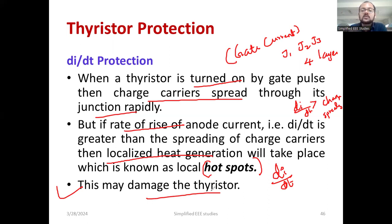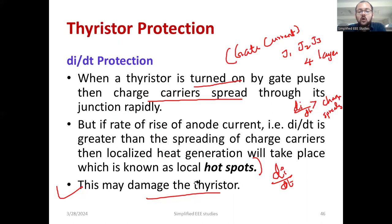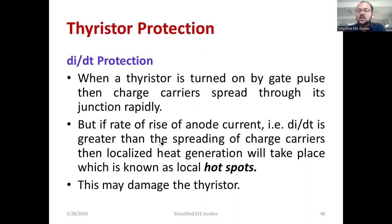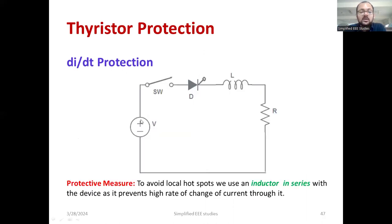The hotspot will generate excess heat and ultimately damage the device. So how to minimize this? How to minimize the DI by DT? We have the solution. DI by DT is a phenomenon occurring in every type of thyristor — whether it is an SCR, triac, or whatever it may be. The DI by DT phenomenon occurs across all thyristor family members.